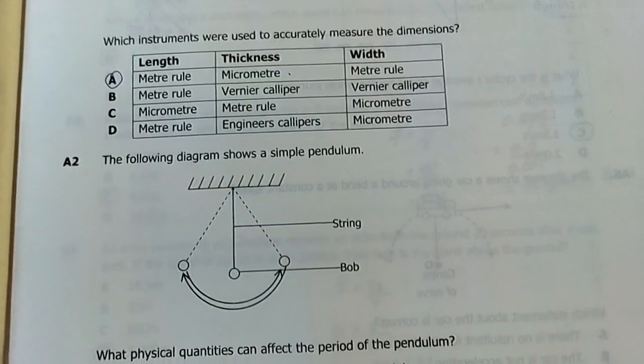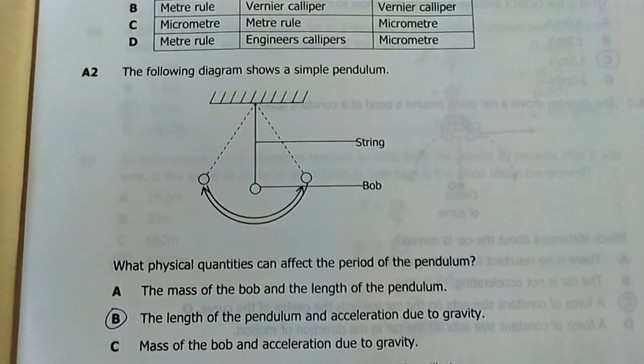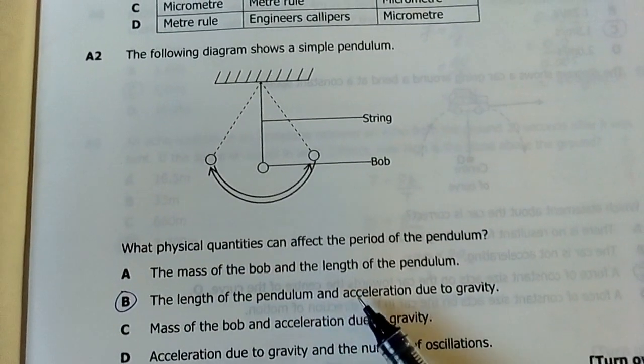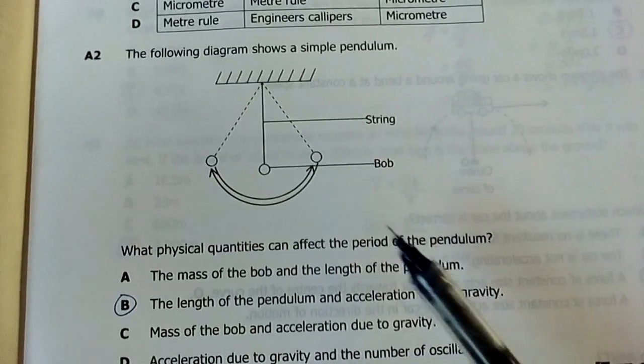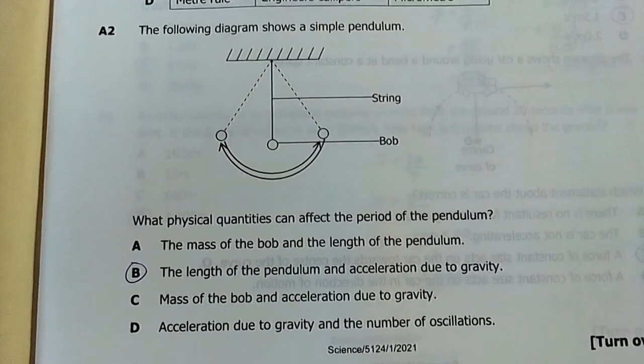Number two: The following diagram shows a simple pendulum. Which physical quantities can affect the period of a pendulum? My answer was B: the length of the pendulum and acceleration due to gravity, which is g, not the mass or anything else.